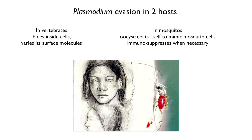Plasmodium, the malaria causal agent, actually has immune evasion in two hosts — both in the human and in the mosquito. In humans and other vertebrates, it hides inside cells and varies its surface molecules. In mosquitoes, its oocyst coats itself and mimics a mosquito cell, and it immunosuppresses when necessary. It has evolved systems of dealing with both environments.